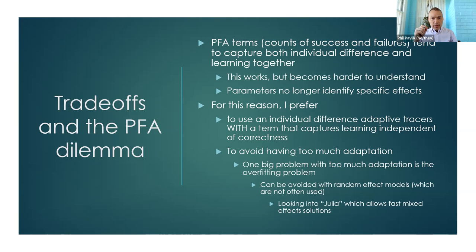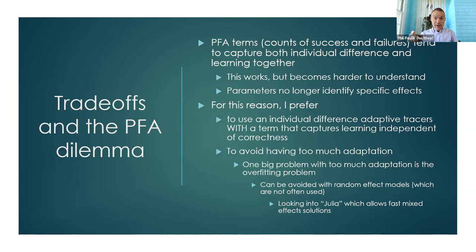If we look at just prior successes for a knowledge component, we can see it's an indicator of learning but also an indicator of whether they knew it before. When interpreting the parameter, it's hard to know how much is due to learning versus how much is due to already knowing it. Similarly with failure — if they get it wrong, they're probably learning something from the feedback, but at the same time they probably didn't know it before. Sometimes you'll even get negative parameters for failures, which are difficult to interpret.